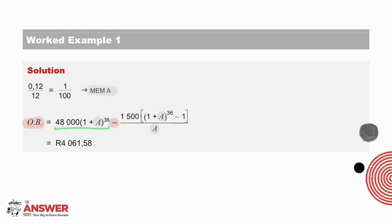and the annuity formula calculating the accumulation of the 36 monthly payments of 1,500 rand already made. The answer here is 4,061 rand and 58 cents.